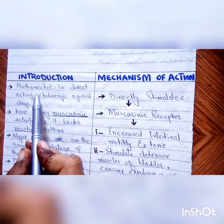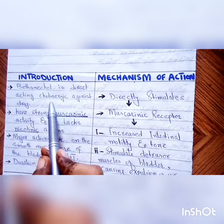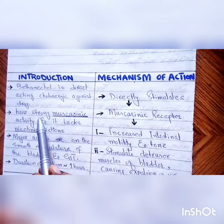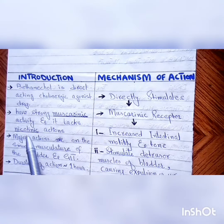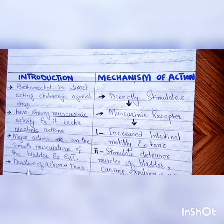Introduction: Miskas Kanawale Ketanakol is a direct-acting cholinergic agonist, which has strong muscular capacity and is a decodent effective agent. This is a major action on the bladder object, because it has smooth muscles, and the duration of action is about one more time.